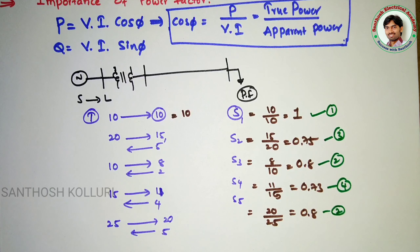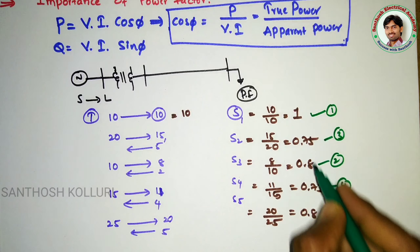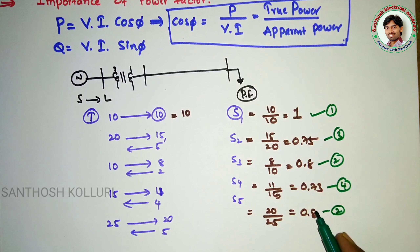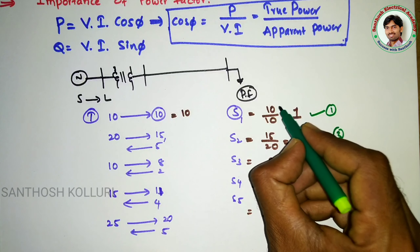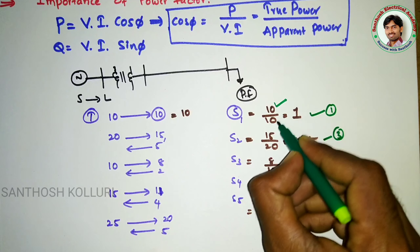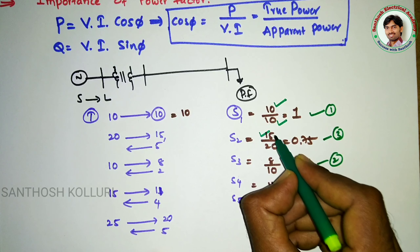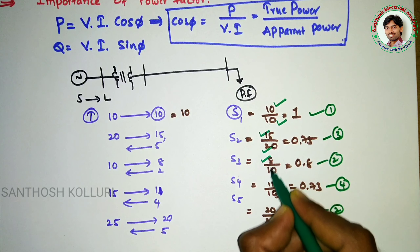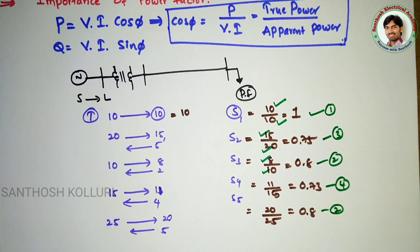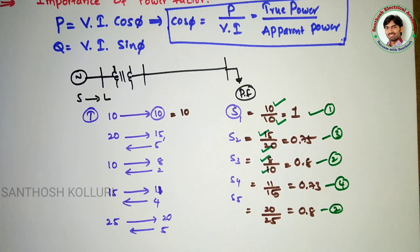These ratios are called power factors. Each one is a ratio between true power to the apparent power. Based on that, you can calculate the power factor.